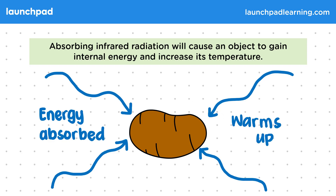So the potato heats up. Normally this just raises its temperature, but the high intensity of the waves in the oven causes the potato to cook. Remember, the potato will still be emitting its own infrared waves at the same time. For your exam, you need to be aware of how all objects can both absorb and emit infrared waves, though you don't need to know why this happens, or why it's infrared waves in particular which are emitted and absorbed.